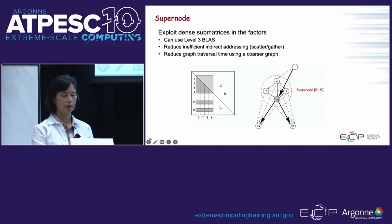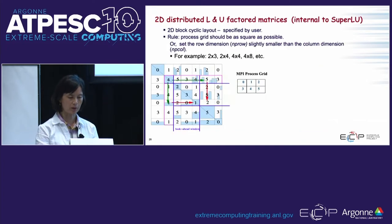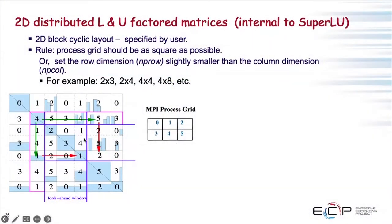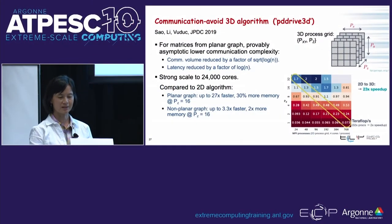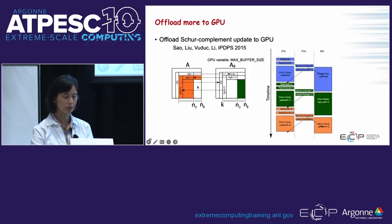Internally in LU factorization we exploit dense structure called supernodes, which lets us leverage Level 3 BLAS operations. The LU storage uses a 2D block cyclic layout to maintain scalability, load balance, and reduced communication. More recently, a 3D representation for LU has also been developed — this reduces communication significantly, and strong scaling has been demonstrated to 24,000 processes. GPU support means the majority of operations run on GPU.